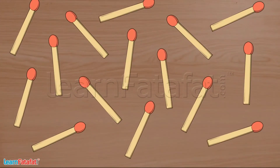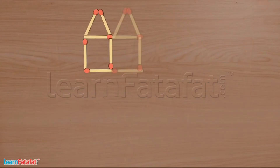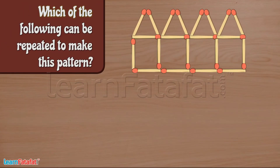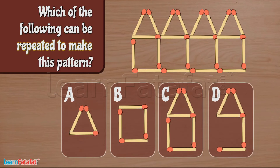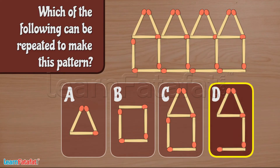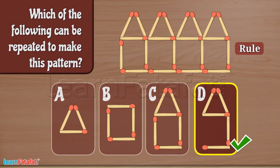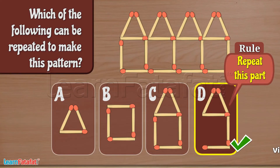Now, take some matchsticks and make a pattern like this. Which of the following can be repeated to make this pattern? Yes, D can be repeated to make this pattern. So, the rule of this pattern is to repeat this part.